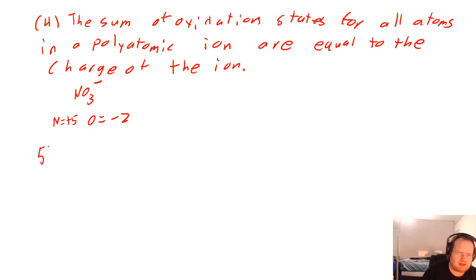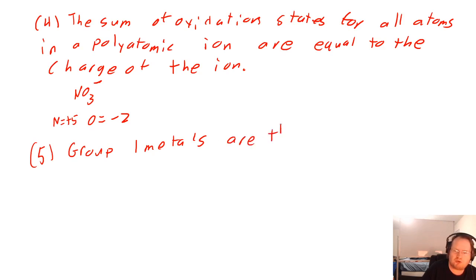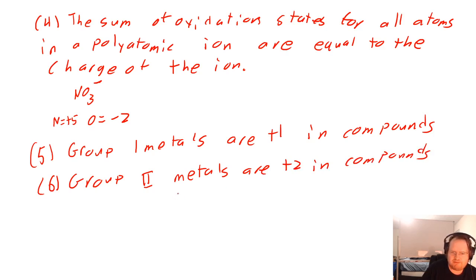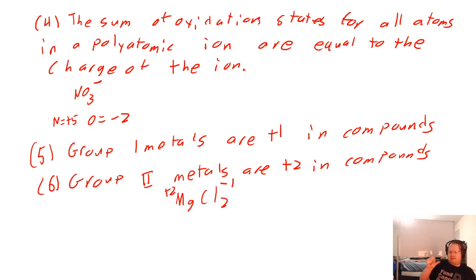Rule five: group one metals are +1 in compounds. Rule six: group two metals — the second column in the periodic table — are +2 in compounds. For example, in MgCl2, Mg has to be +2 because it's in group two. Since we're down to one atom, chlorine has to be −1 because it's the last remaining atom and the compound MgCl2 must be neutral. So this is how we assign our oxidation states.